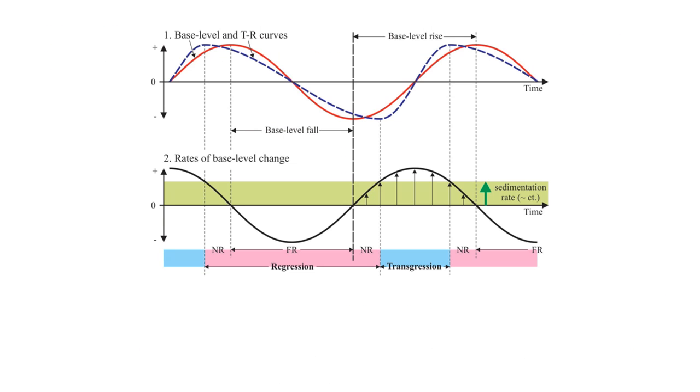So here is again the base level curve, the rates of base level change divided into regression and transgression. There's also now a transgression-regression curve, which you can see does not exactly follow the base level curve. It's somewhat more asymmetrical. So this time of, and so we're going to use this curve, I should mention, to divide this complete sequence into these systems tracts. We're going to use the normal and forced regression and the transgression, which creates these characteristic depositional patterns to divide us into systems tracts.